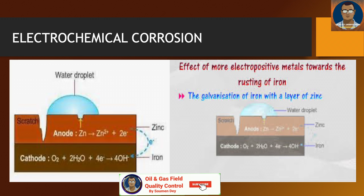Electrochemical corrosion is the deeper physics lying behind cathodic protection. It occurs when two dissimilar metals are present in an electrolyte medium. Seawater is an efficient electrolyte. Different parts of the same metal made dissimilar by treatment, or a metal and its oxides, are sufficiently dissimilar to create such corrosion.